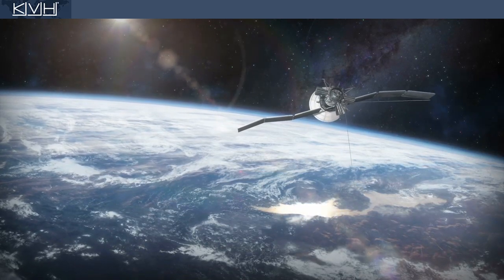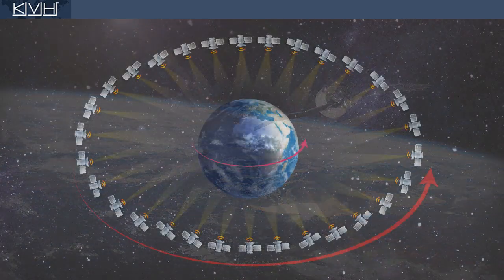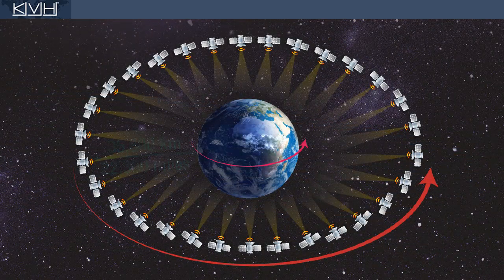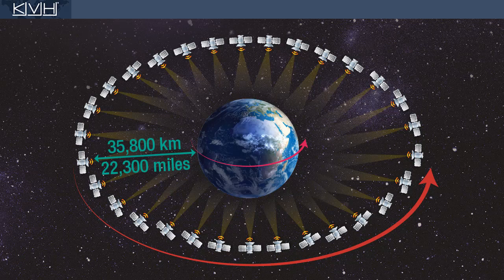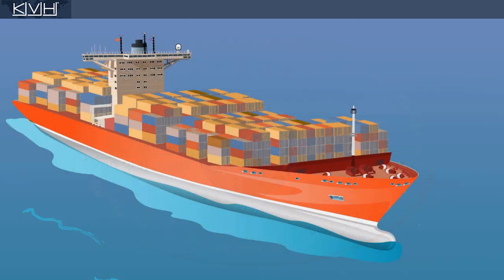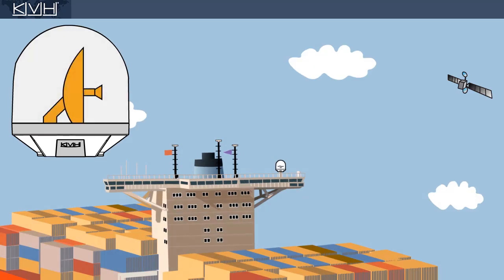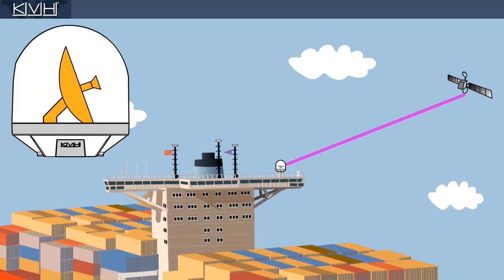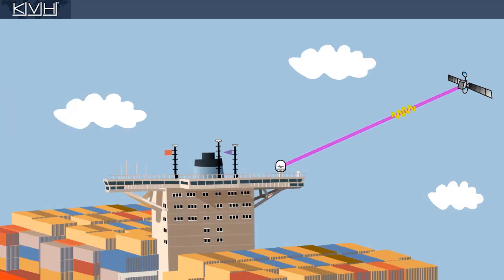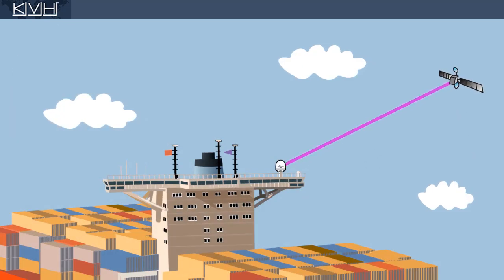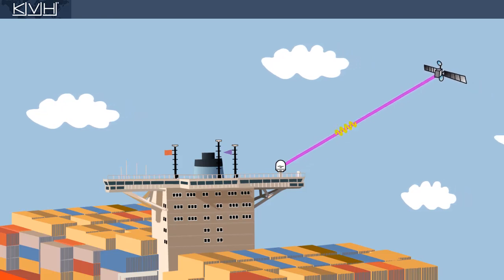Satellites in a mini-VSAT broadband network are located over 35,000 kilometers, or 22,000 miles, above the equator. To communicate with the satellite, the antenna must point its reflector at its precise location in the sky, and it must remain locked on it as the vessel moves.